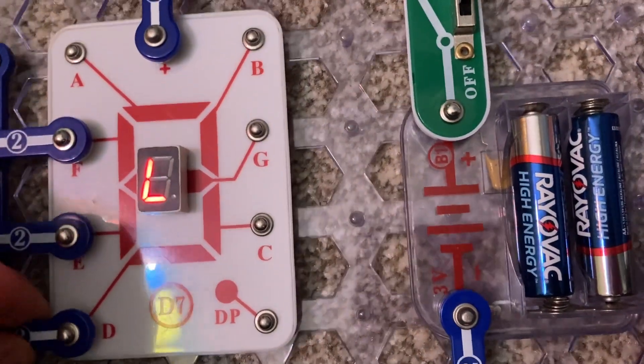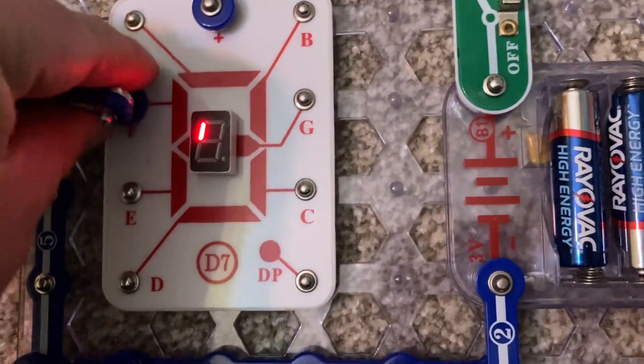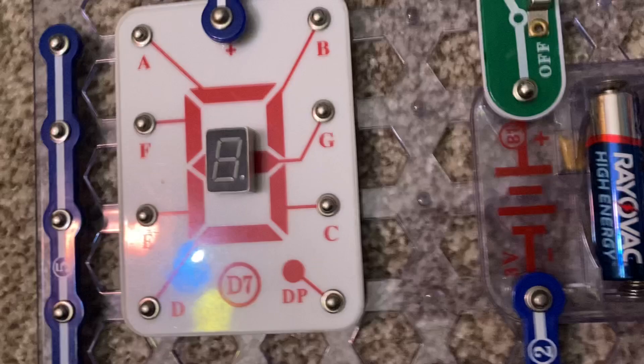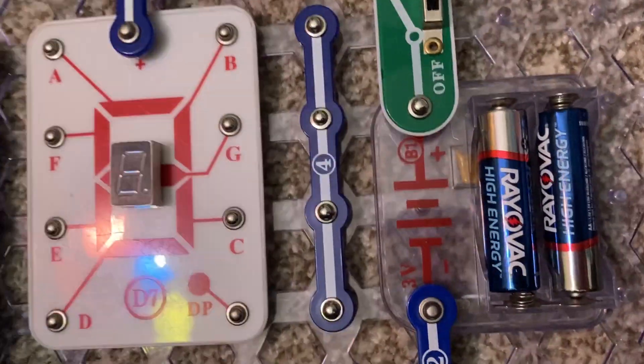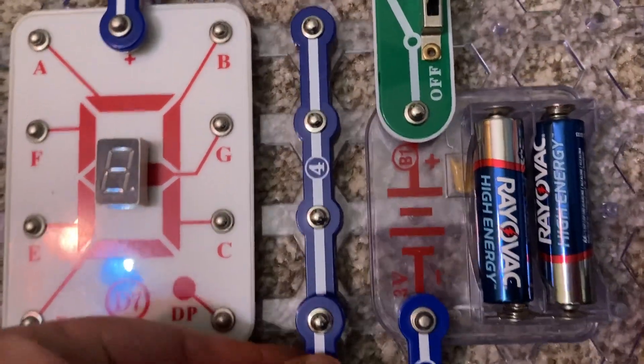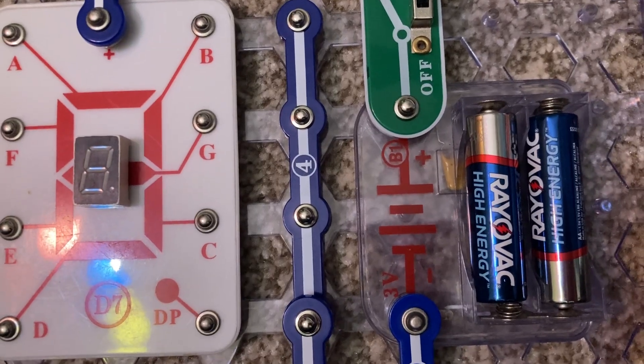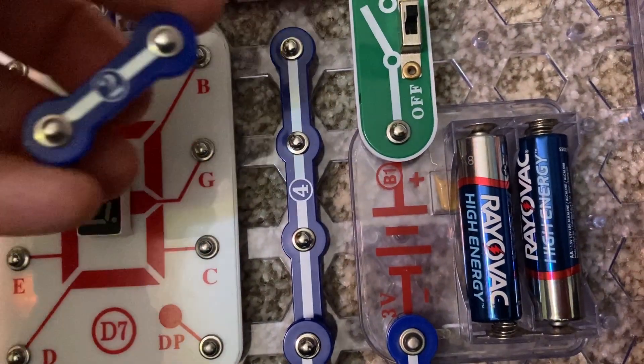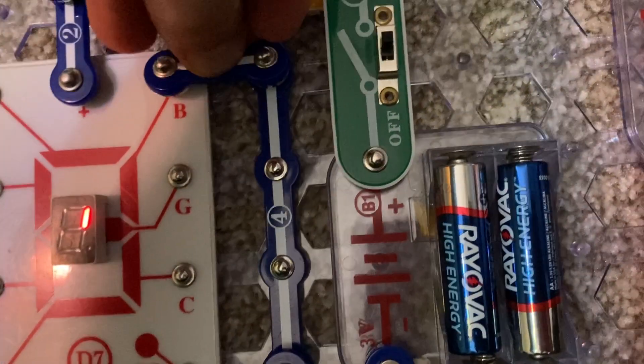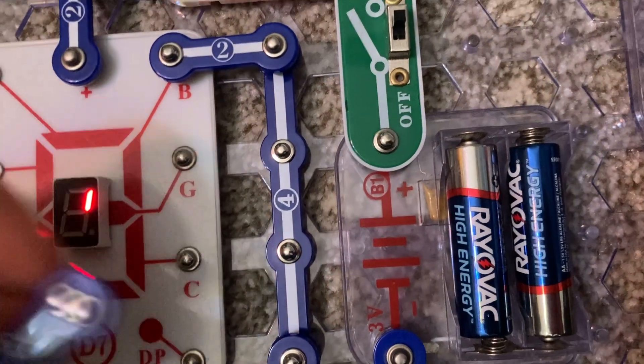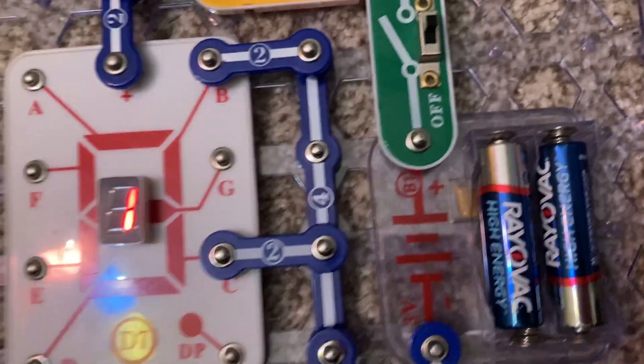And now for the first number, number 1, I'm going to insert another 4-snap wire to the right of the display, connected to the circuit with a 2-snap wire. And then I will place two snap wires between points B and C. Now you have the number 1.